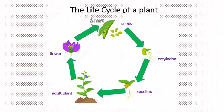This is the life cycle of a plant. It starts with just simple seeds and the seeds grow to become what is called a cotyledon.